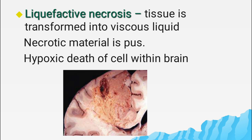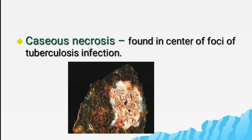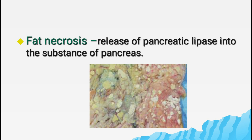Here we can see an infarct in the brain showing dissolution of tissue. Caseous necrosis is found in the center of the foci of tuberculosis infection. Caseous means yellow-white, also described as cheesy debris. Here we can see tuberculosis of the lung with a large area of caseous necrosis containing that yellow-white cheesy debris.